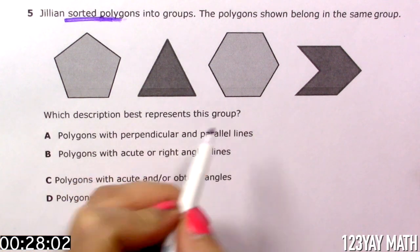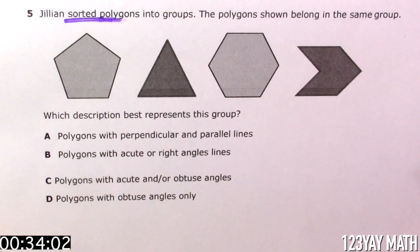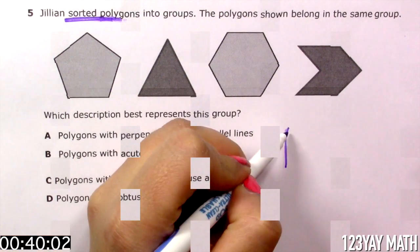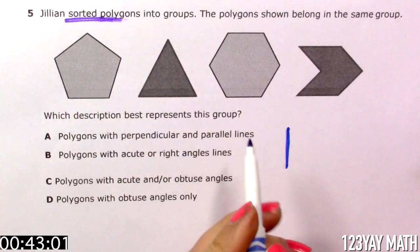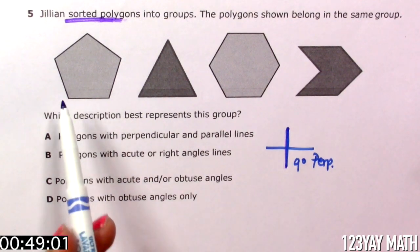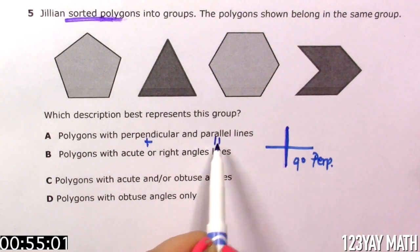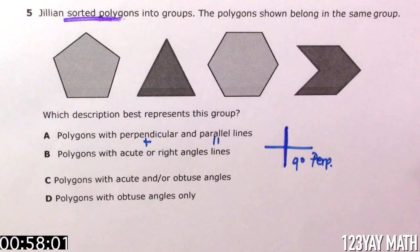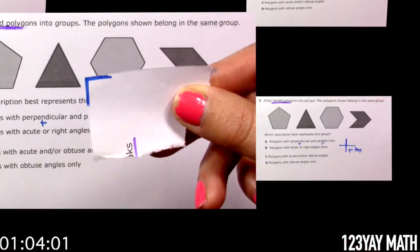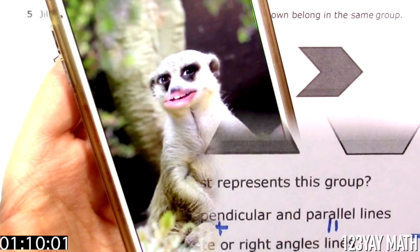And it says, which description best represents this group? A. Polygons with perpendicular and parallel lines. Okay, let's see. Perpendicular lines. What are perpendicular lines? Remember, perpendicular lines create 90 degree angles. So we have to find if these shapes have perpendicular and parallel lines. Let's see. Remember the trick that I used in another video? Just color the corner of a piece of paper because this is a 90 degree angle. What do we do next? Label the angles on each shape. Let's do that.